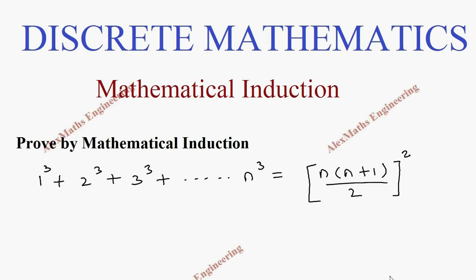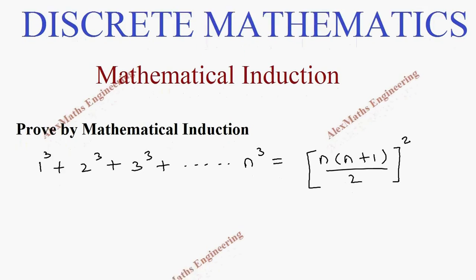Hi students, this is Alex. In this video we are going to prove by mathematical induction: 1 cube plus 2 cube plus 3 cube plus dot dot dot plus n cube equals n times (n plus 1) divided by 2, whole square.